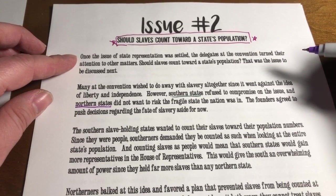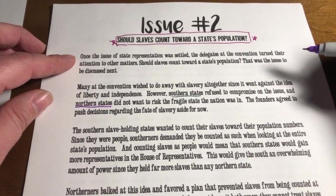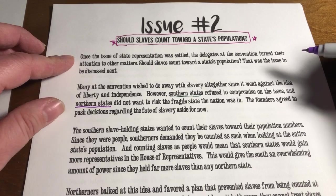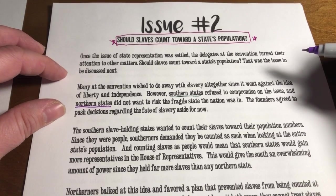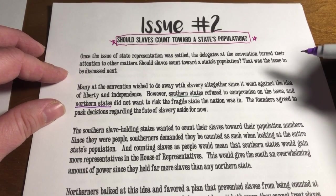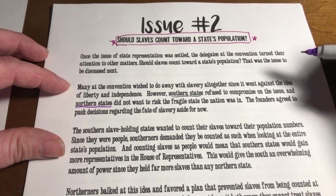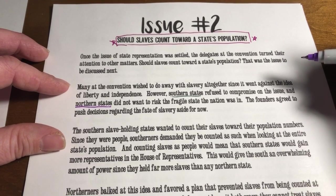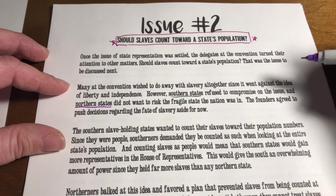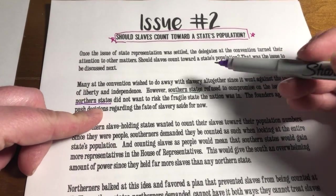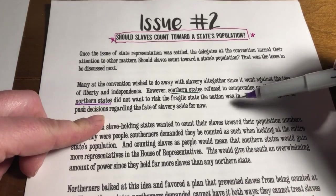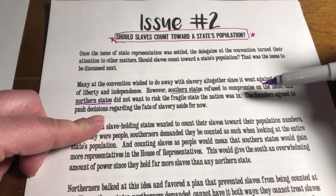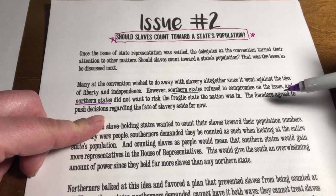Once the issue of state representation was settled, the delegates at the convention turned their attention to other matters. Should slaves count towards the state's population? That was the issue to be discussed next. Many at the convention wanted to do away with slavery altogether, because it goes against the idea of liberty and independence. However, southern states refused to compromise, and northern states did not want to risk the fragile state the nation was in.